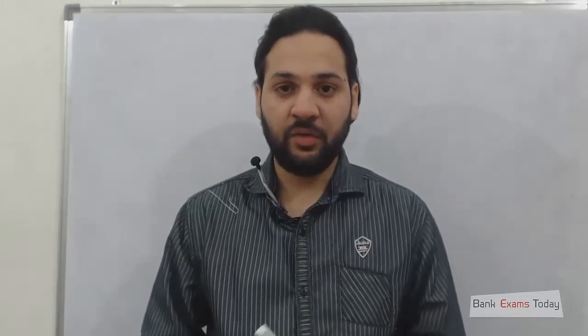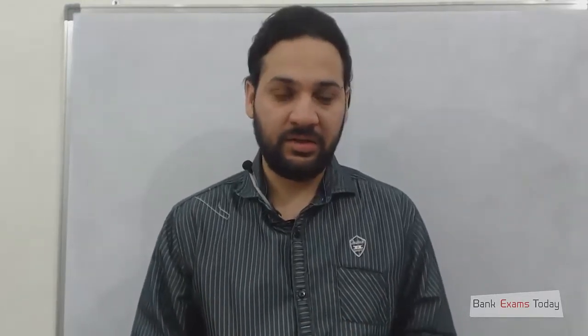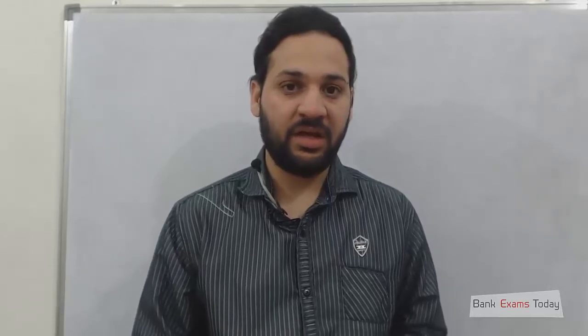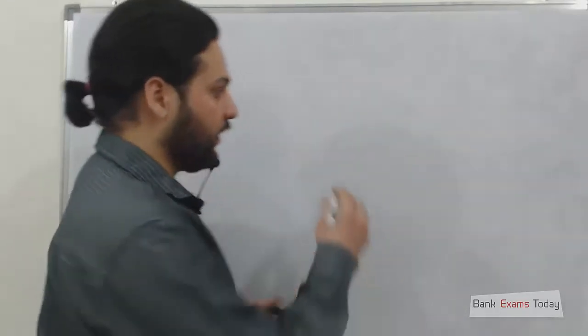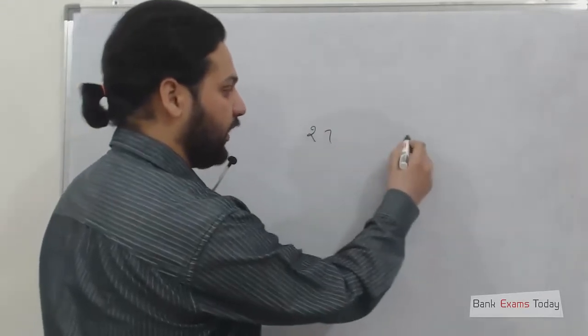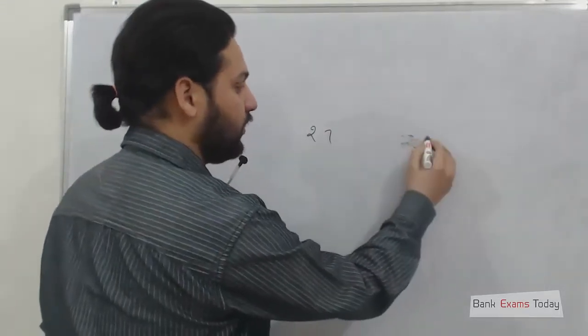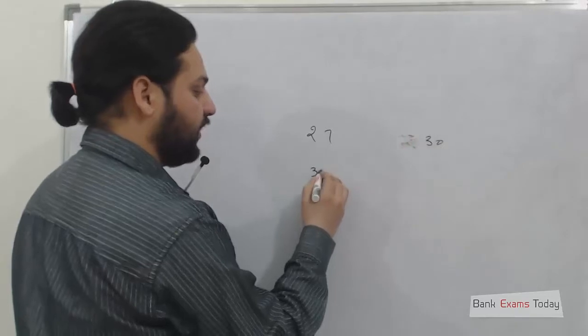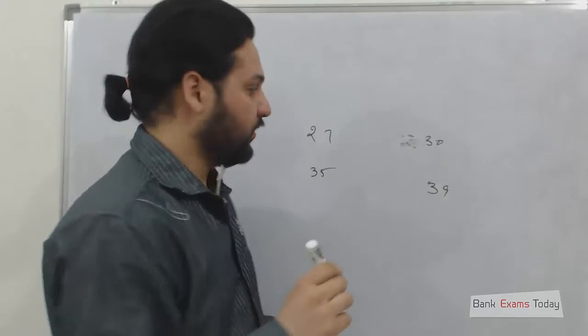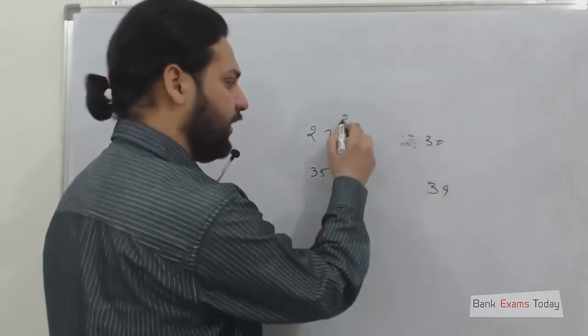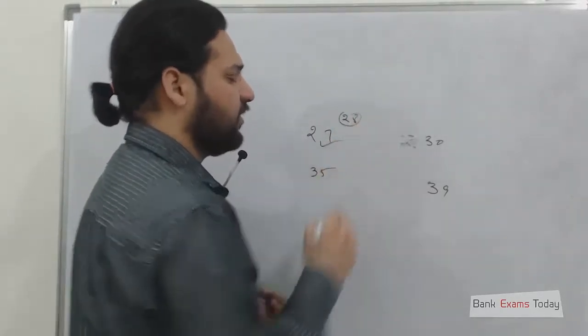Secondly, never try to find the exact answer. Try to find the nearby answer. If the options are given as 27, 28, or 30, then 35, 39, and if your answer is about 28, then you should mark 27 as the answer.